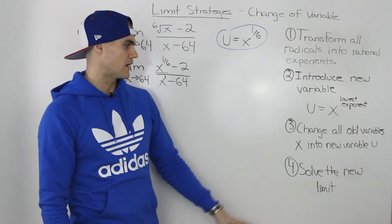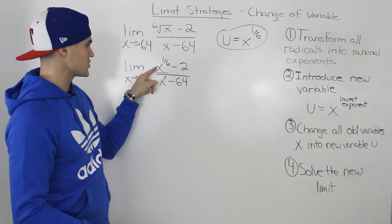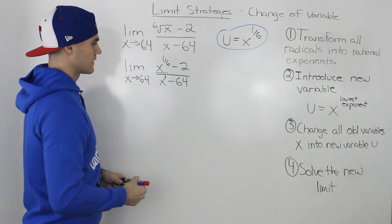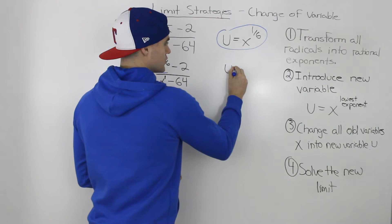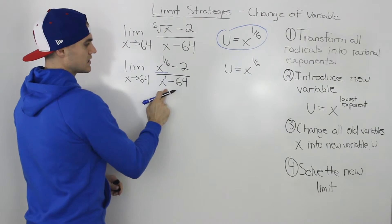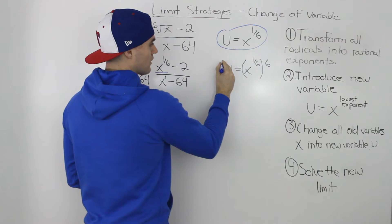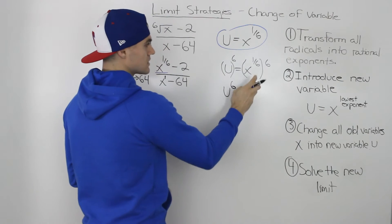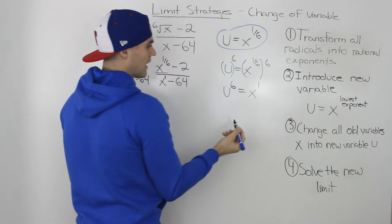Step 3: change all the old x variables in the limit into the new variable u. We already have x to the power of 1 over 6, which equals u. Now we need an expression for x to the power of 1. Starting from u equals x to the power of 1 over 6, we raise both sides to the power of 6. That gives u to the power of 6 equals x to the power of 1 — since 1 over 6 times 6 equals 1.